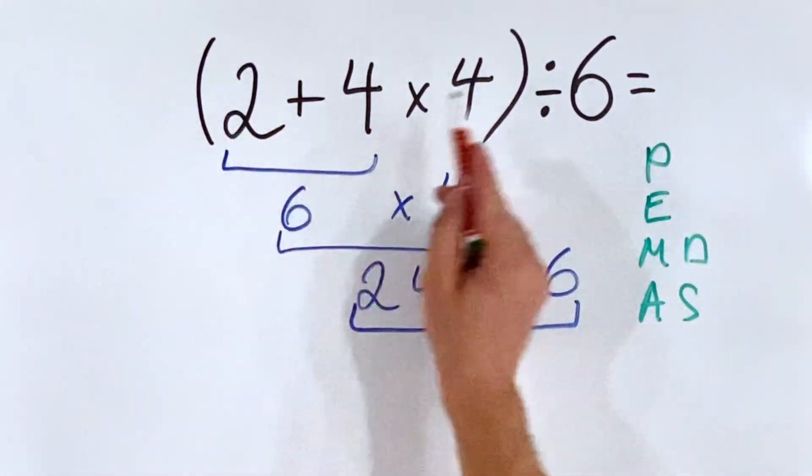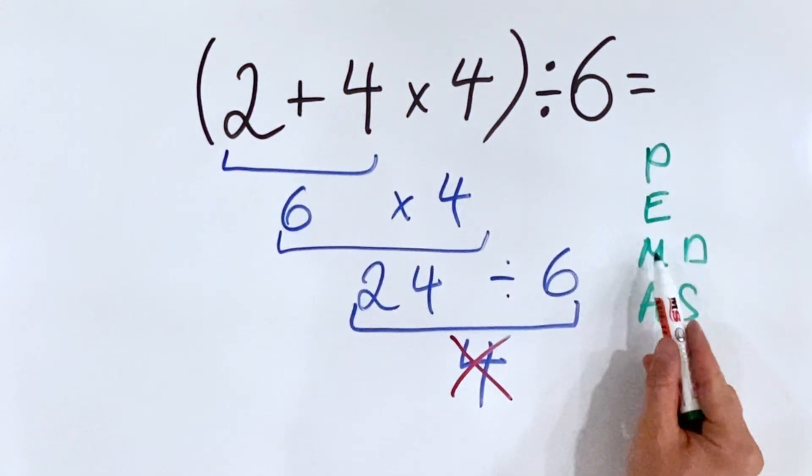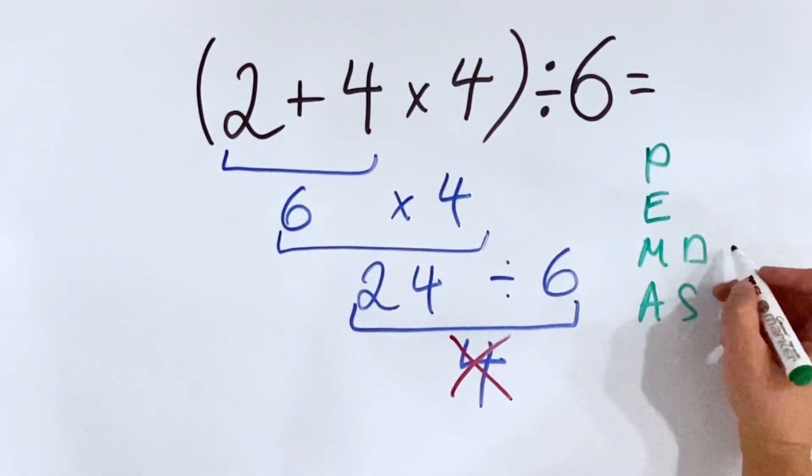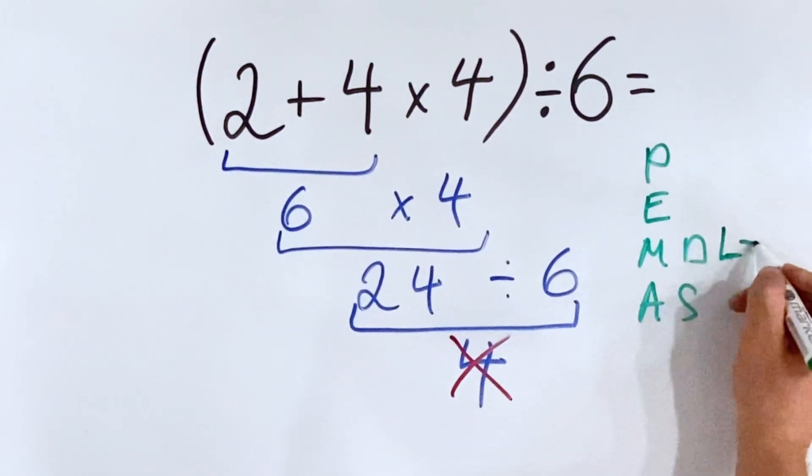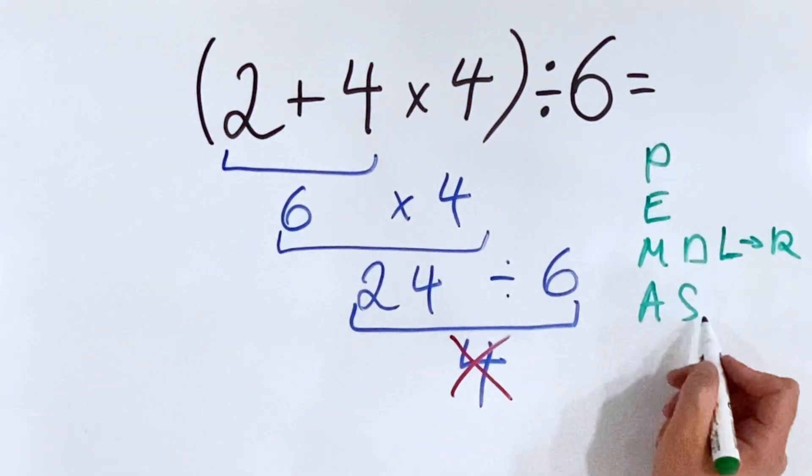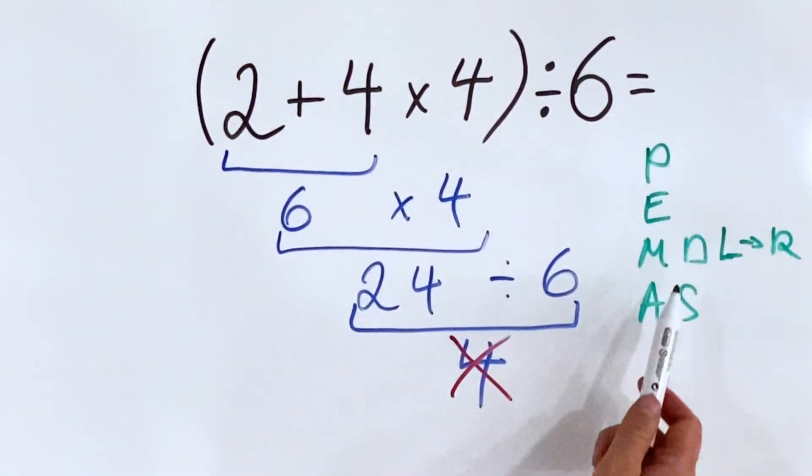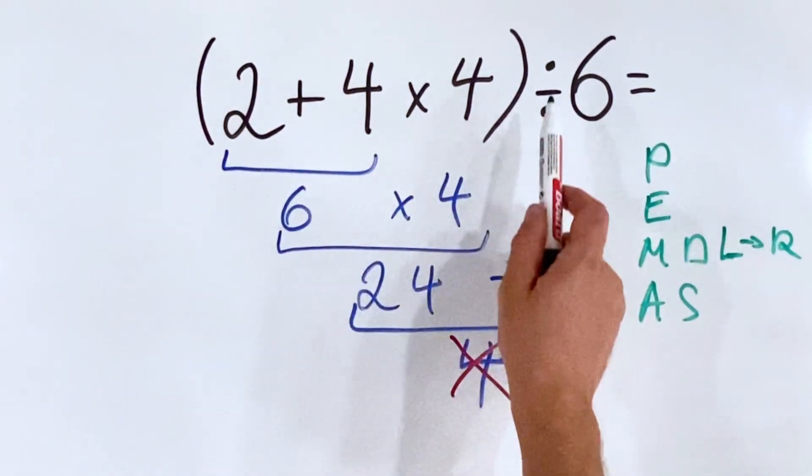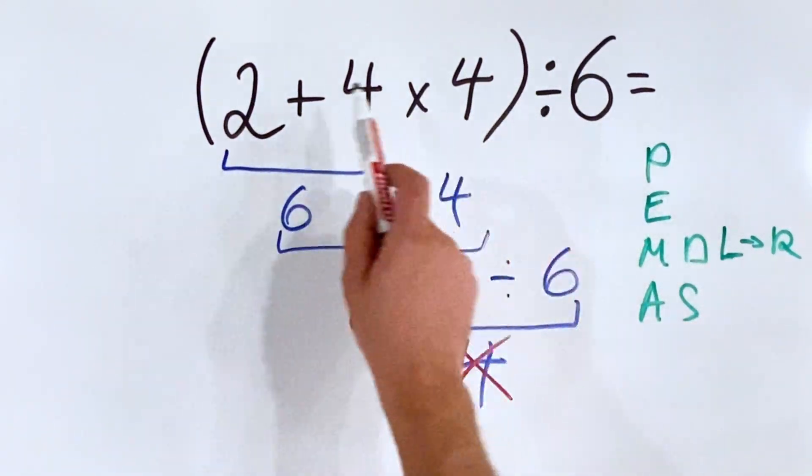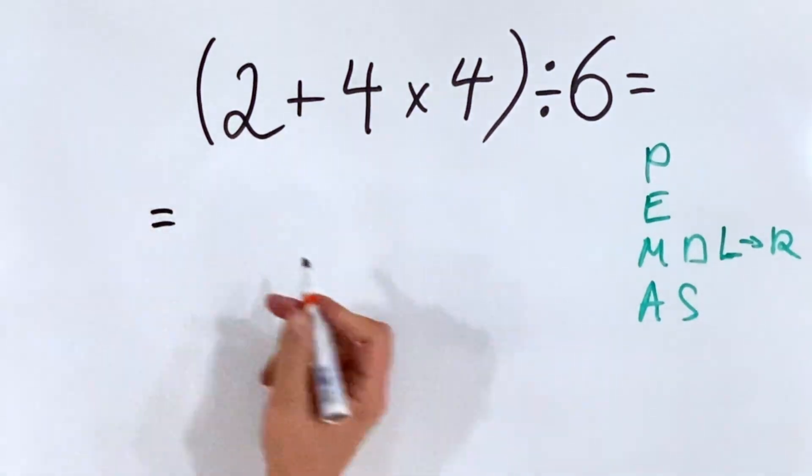PEMDAS, where P stands for parenthesis, E for exponents, multiplication and division which needs to be done from left to right, and addition and subtraction. In this case we have parenthesis, we have multiplication, division, and addition. What we'll calculate first? We'll calculate the parenthesis, and of course we do first the multiplication because it has priority over addition.